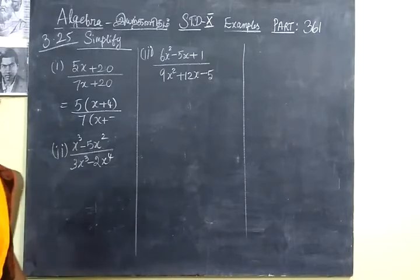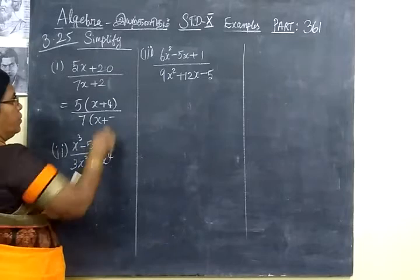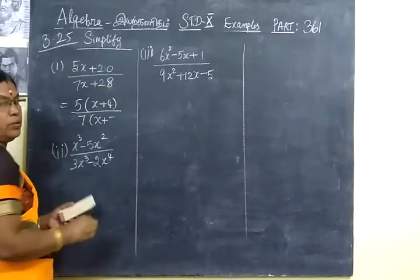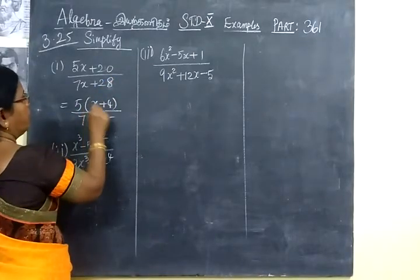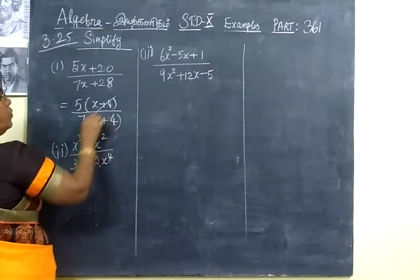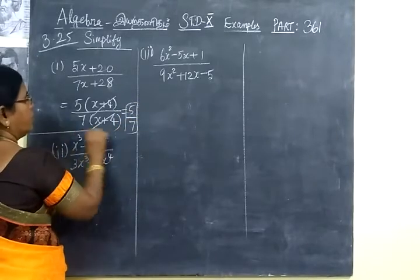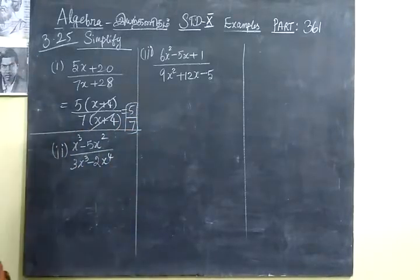Here it is given 5x plus 20 over 7x plus 28. So take 5 common x plus 4 and 7 common x plus 4. So x plus 4, x plus 4 cancel. So the answer is 5 by 7. This is very simple sum only.